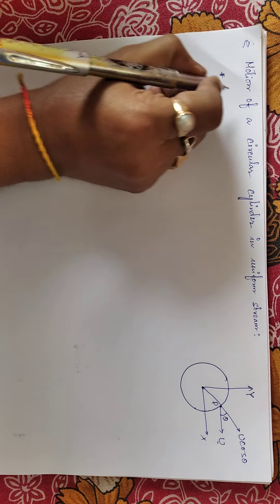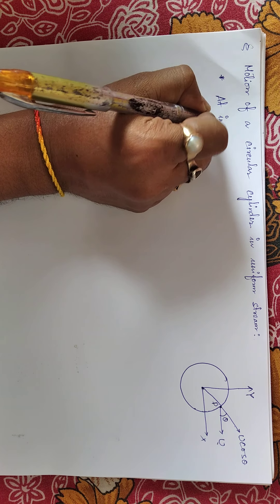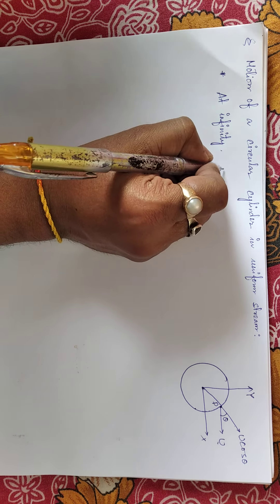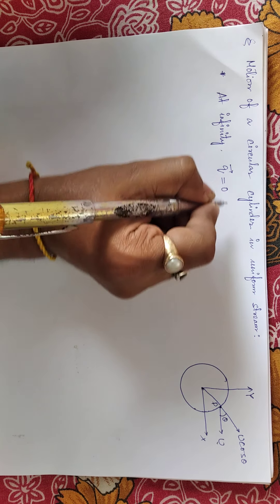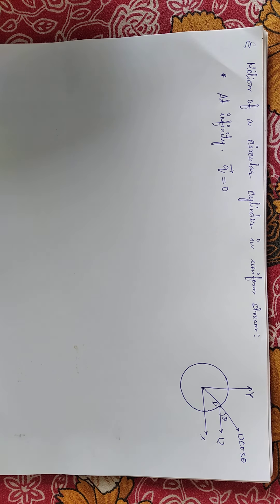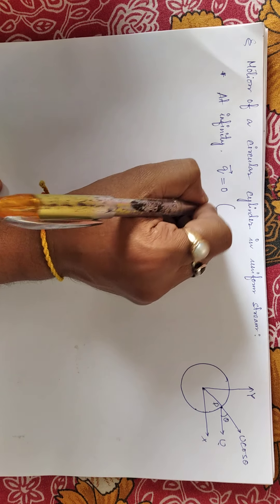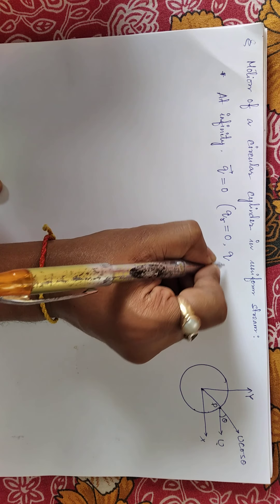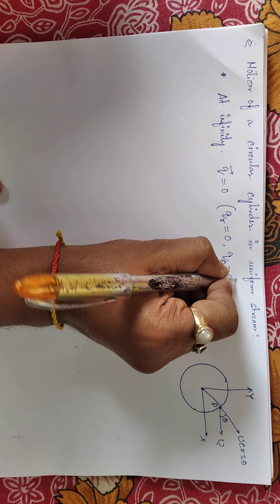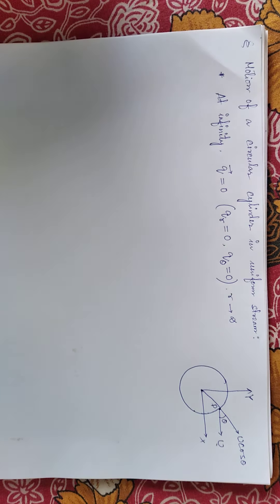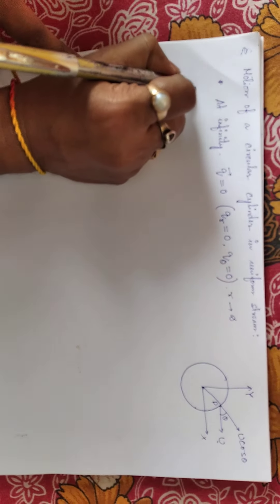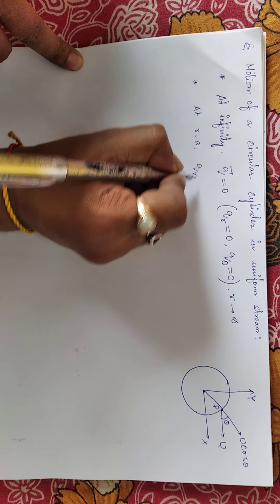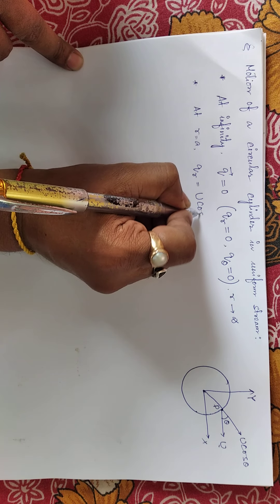There are some assumptions taken to derive this problem. The first one is that at infinity, or far away from the sphere, the velocity is zero: q vector equals zero. In polar coordinates, both the radial component qr and the cross-radial component q-theta are zero as r tends to infinity. The second condition is that at r equal to a, that is at the surface of the sphere, qr equals U cos theta.